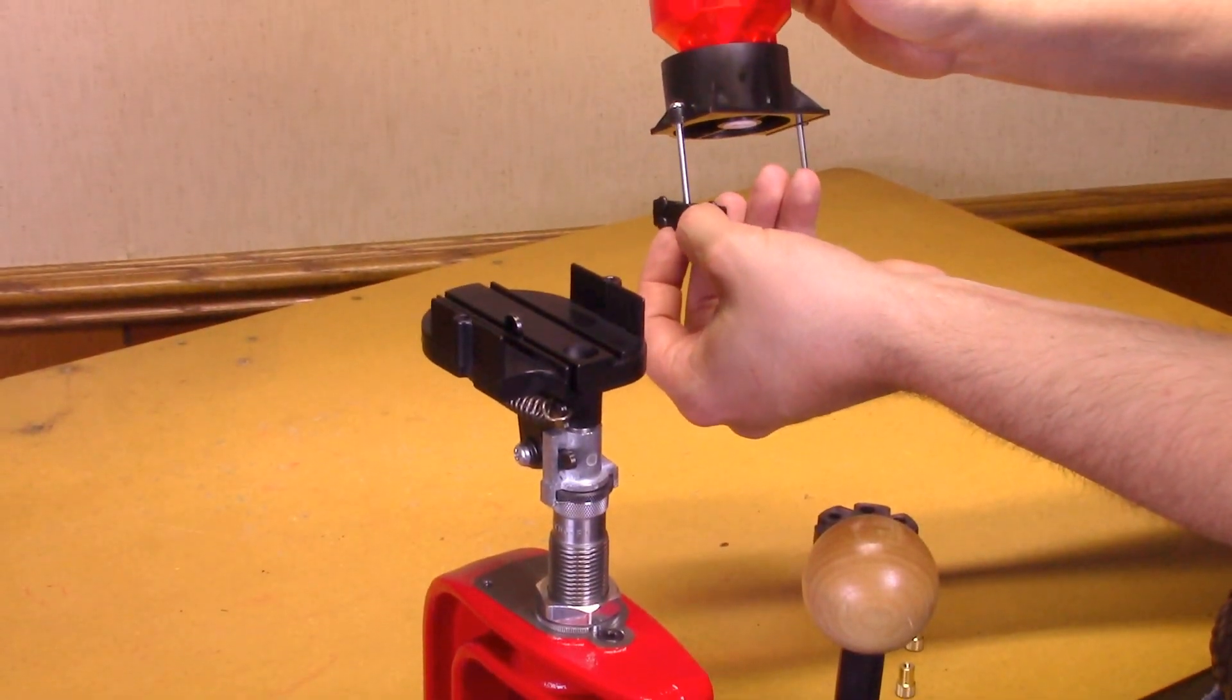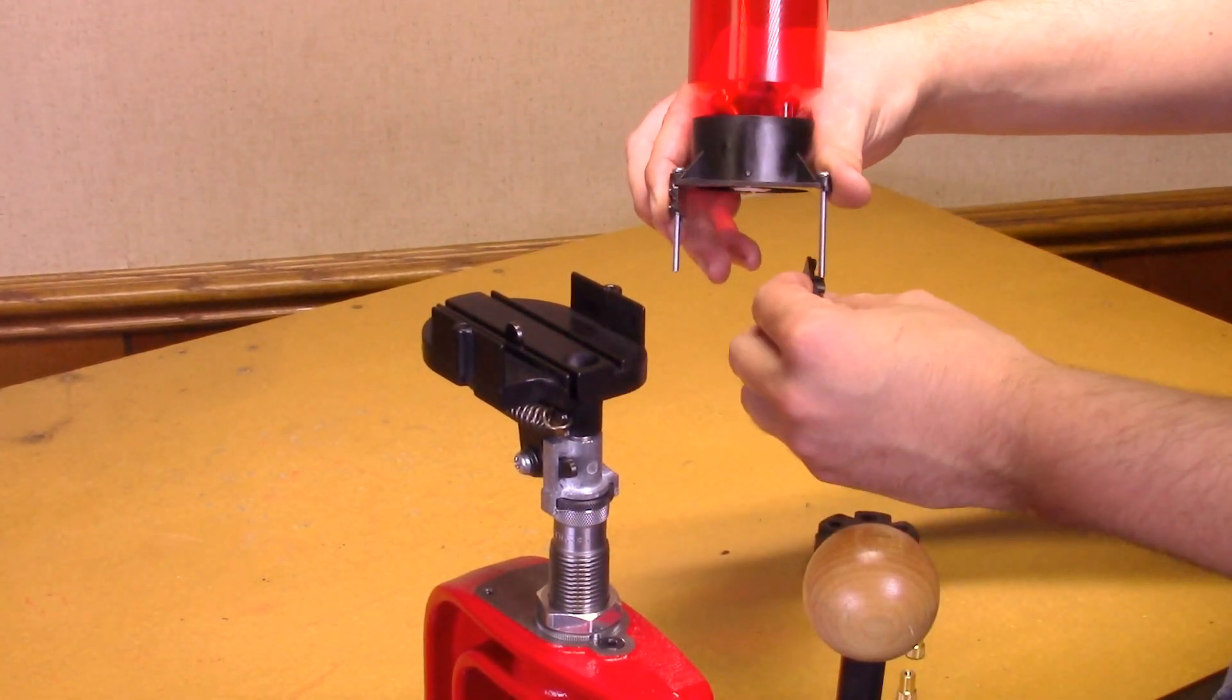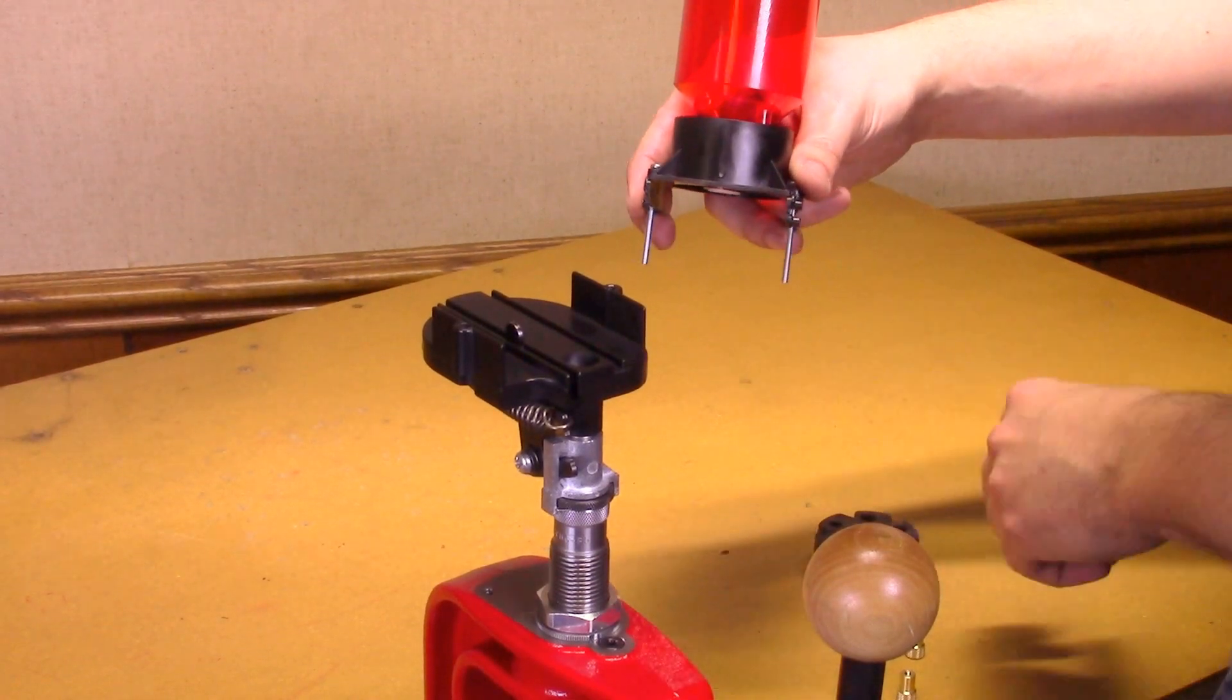Use the pan head bolts provided. These are proper for the Pro Auto Disc. You use the type A screws provided for the square auto disc.